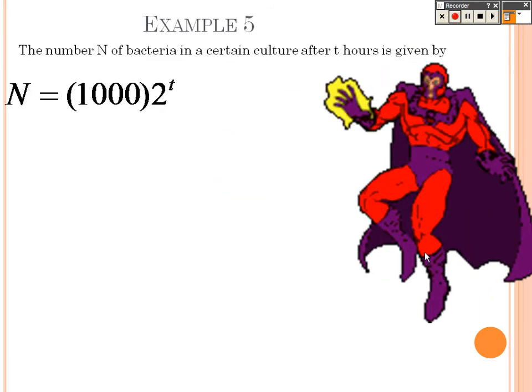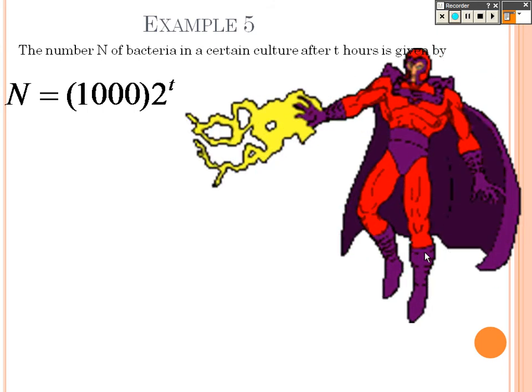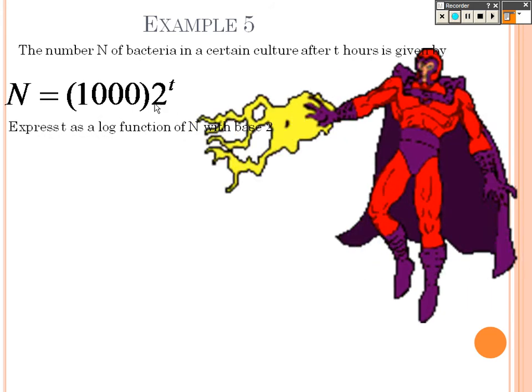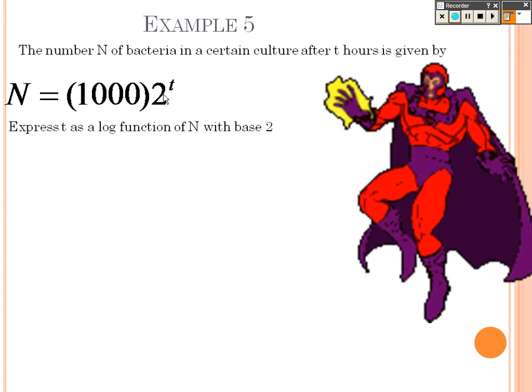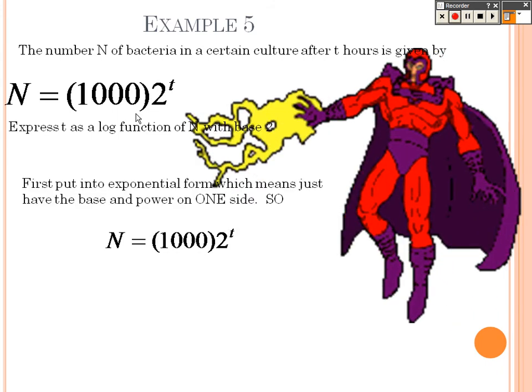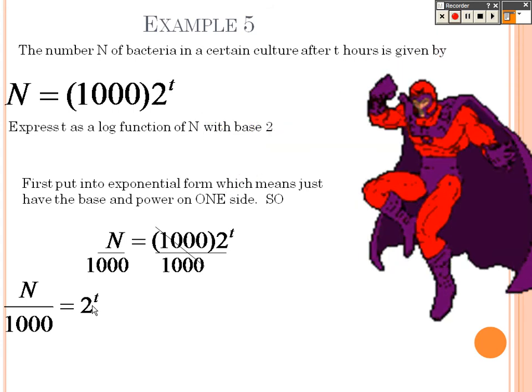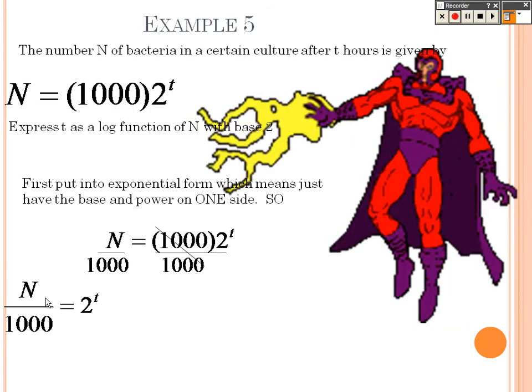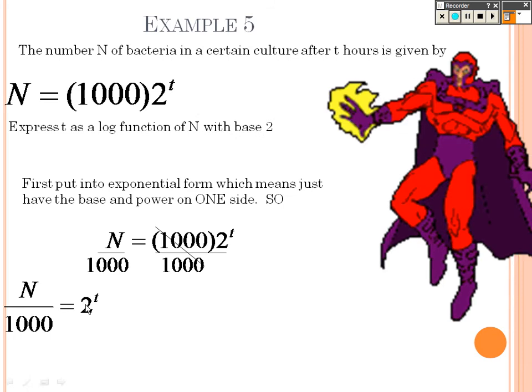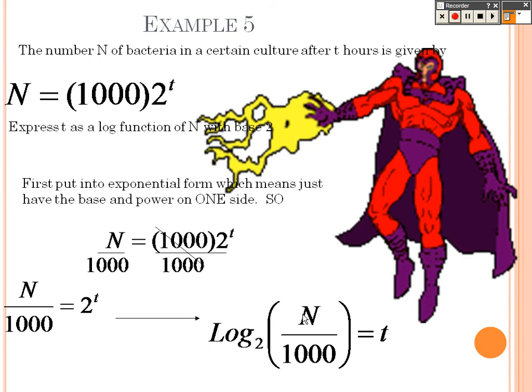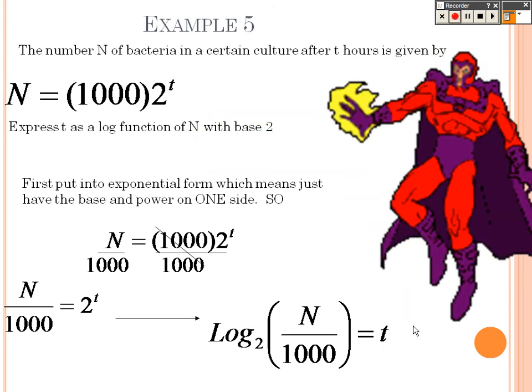Example 5. The number N of bacteria in a certain culture after t hours is given by this formula. Now I want to get t by itself. But in order to do that, I need to get that 2 by itself. So I'm going to divide both sides by that 1,000. And when I do that, now I can get t all by itself. I can do log base 2 on both sides to get rid of that, to switch it to an exponential. So we get log base 2 with N over 1,000 equals t.